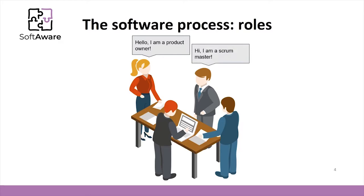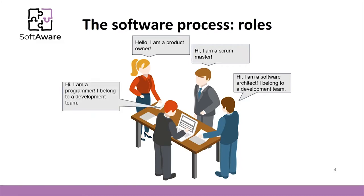The Scrum master will supervise the teamwork and ensure that the activities of the software process are performed correctly. Karolius is a software architect, therefore he will participate a lot in the design activities. And Thomas is a programmer — he loves coding, implementing the software features, so he will mostly engage in software construction activities. On the other hand, Thomas needs to be aware of the different activities so that he can construct the right product, and therefore he participates more or less in other activities as well.